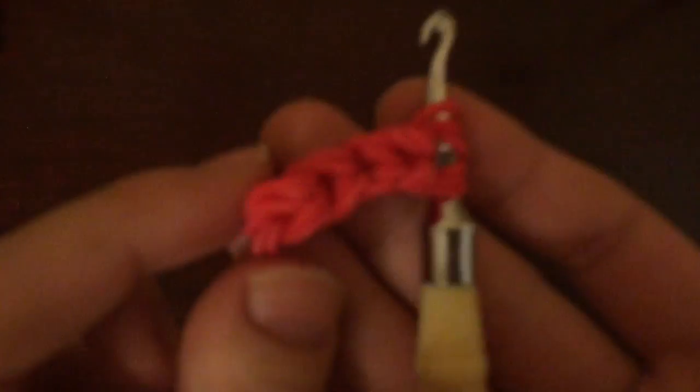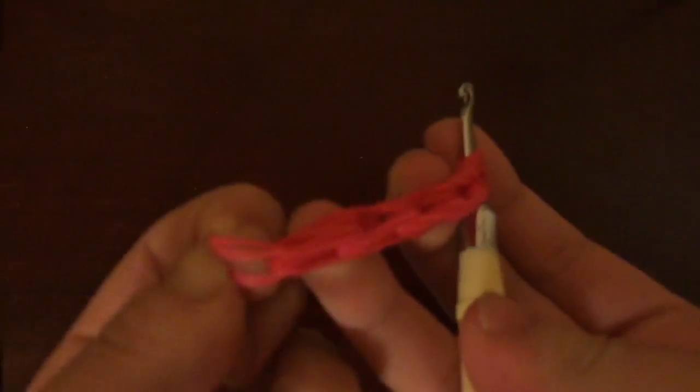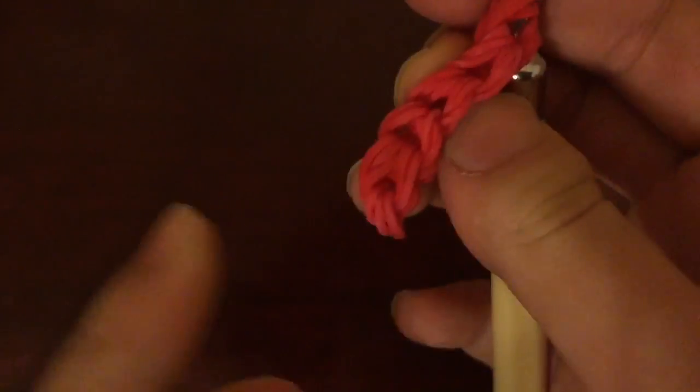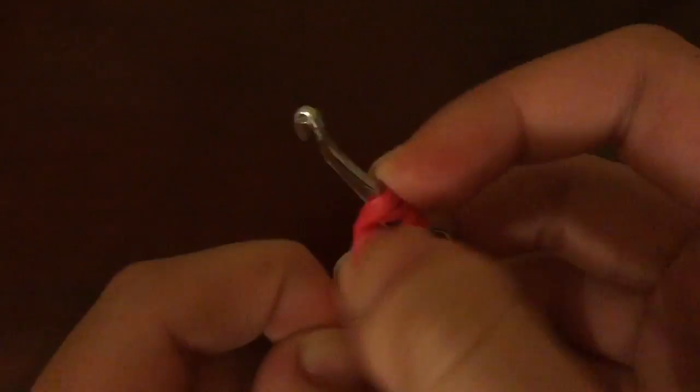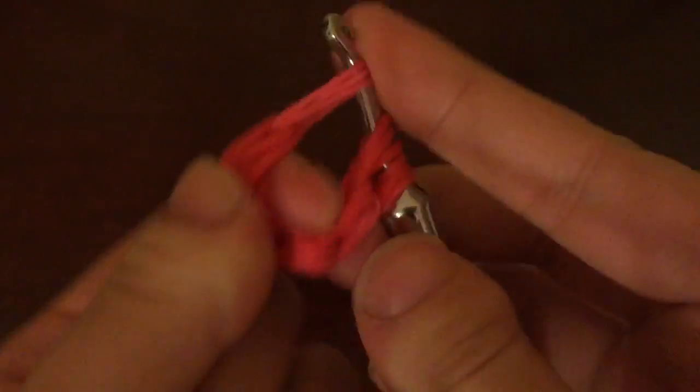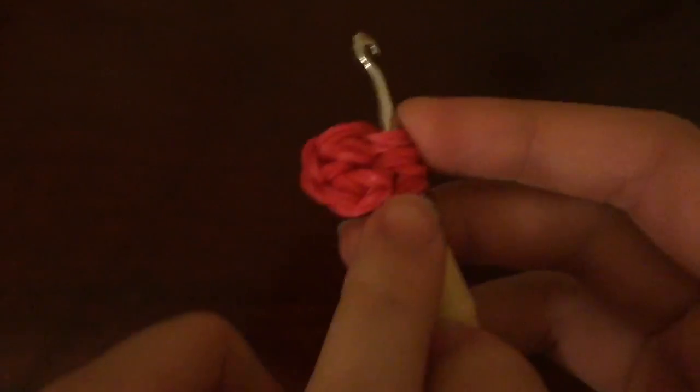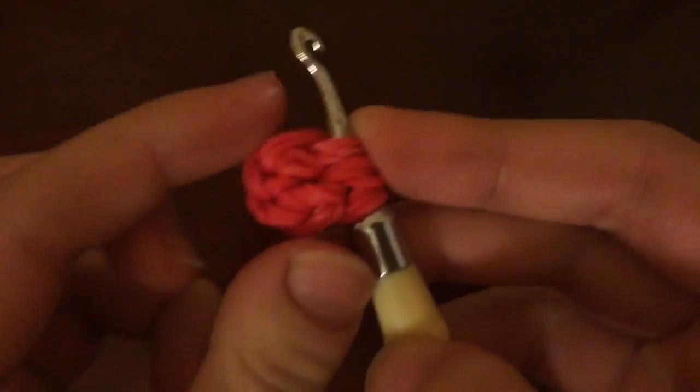So now what you want to do is grab the first set of loops we made. It should be at the bottom here. And you're going to stretch them onto the hook. So basically, now you have no open ends. And you can see how this creates like the foot of the stocking part.